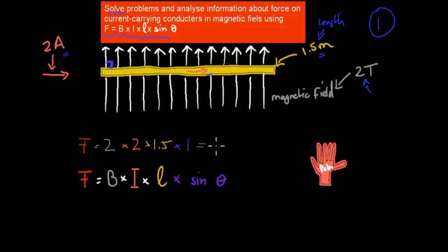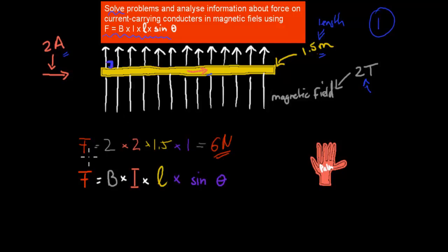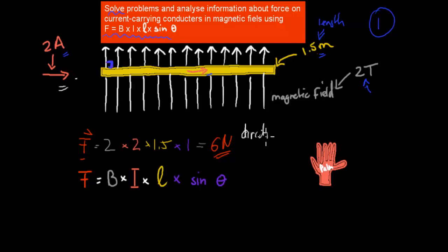So we have 6 newtons being produced. We still have to find the direction, because force is a vector and a vector always needs to have a direction. And that's how we use the actual direction of the current to be able to get that.